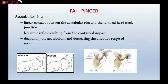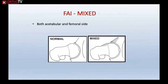The acetabular side of impingement is called pincer. Linear contact between the acetabular rim and femoral head-neck junction causes the labrum to become ossified, deepening the socket and decreasing range of movement. This damages acetabular cartilage, especially along the rim at the chondrolabral junction. In most cases — about 80% — we see the mixed type involving both cam and pincer.